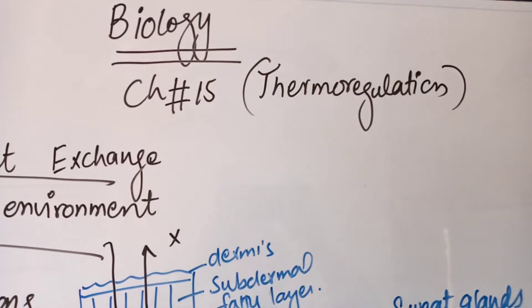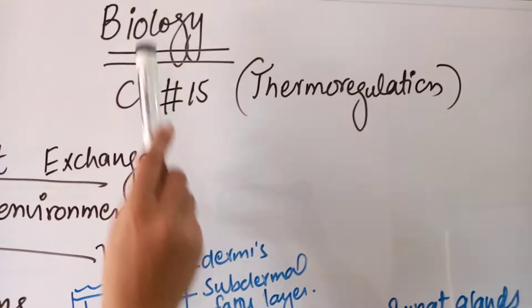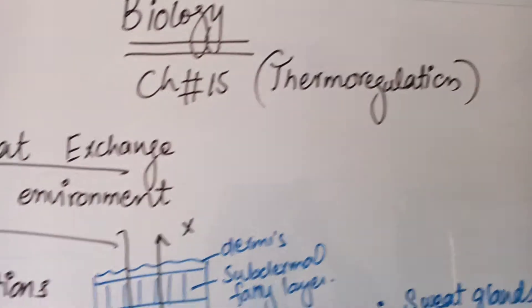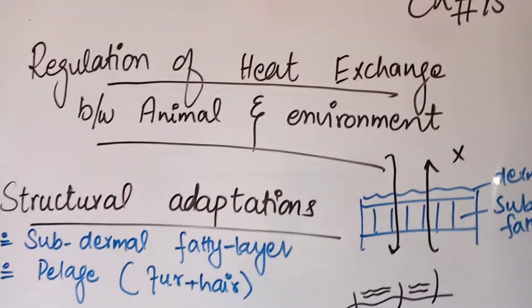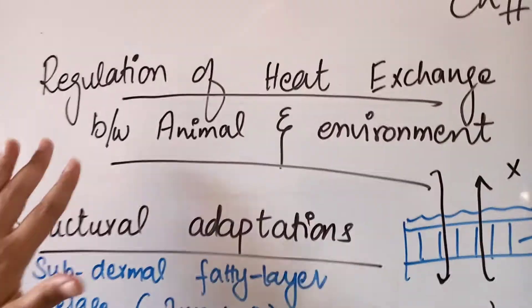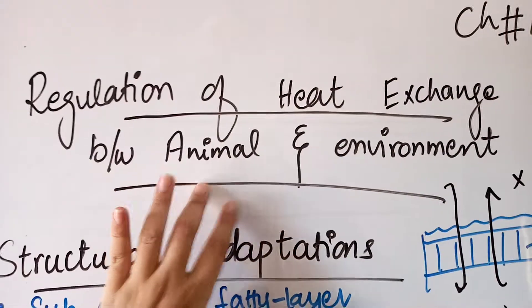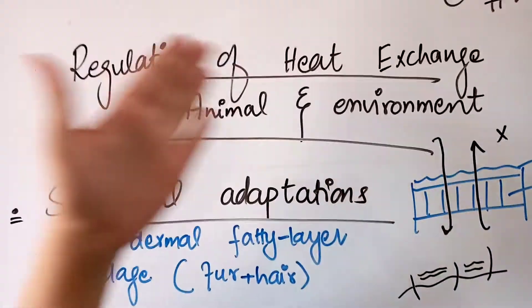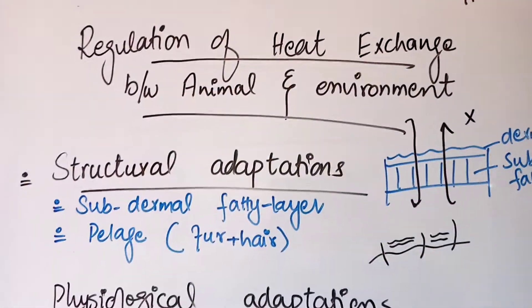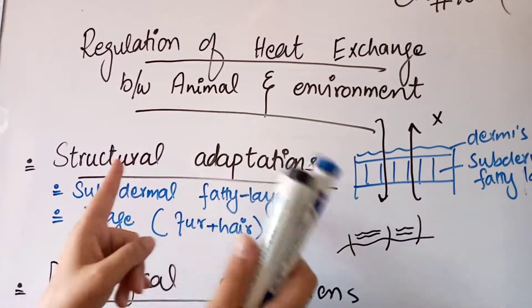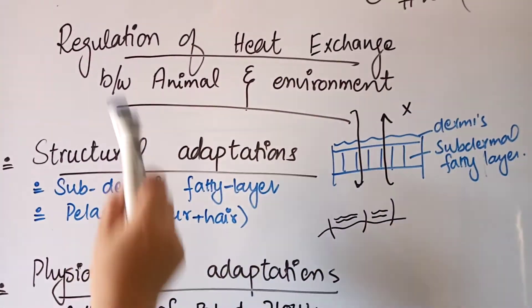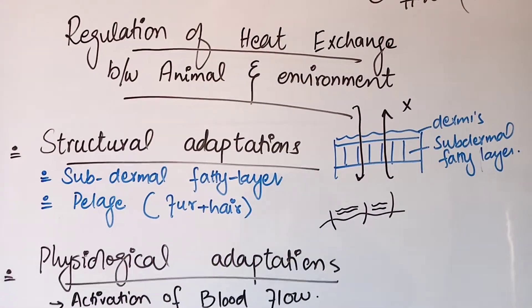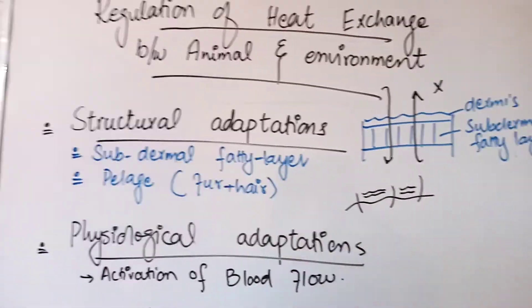Assalamu alaikum, bismillahirrahmanirrahim. Biology Chapter No. 15: Thermoregulation. Today we have to discuss the regulation of heat exchange between the animal and the environment — how does the animal exchange heat with the environment? Let's see the different adaptations in this video.